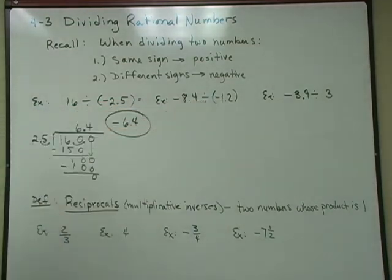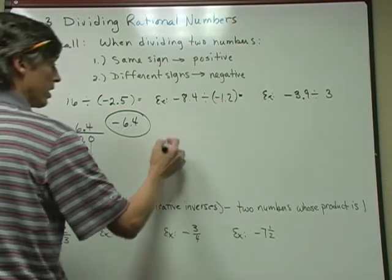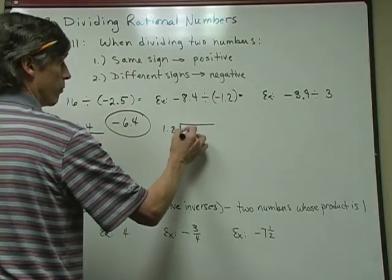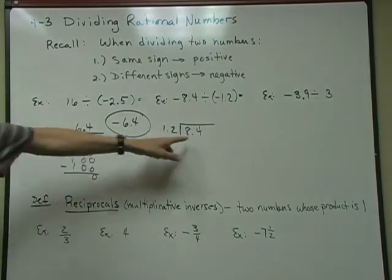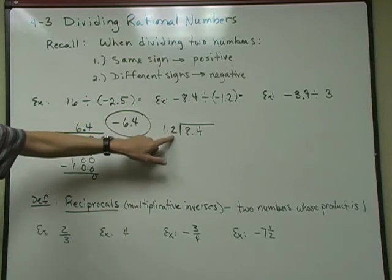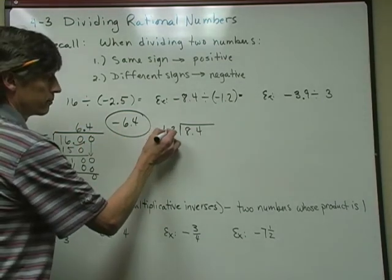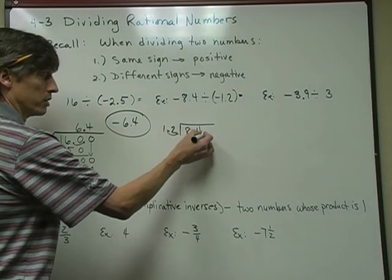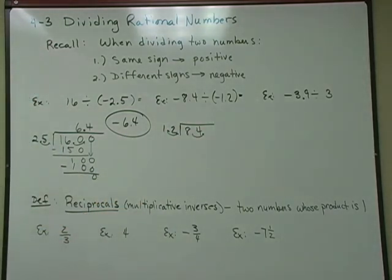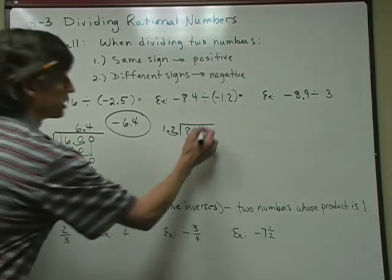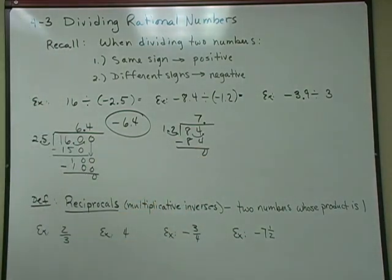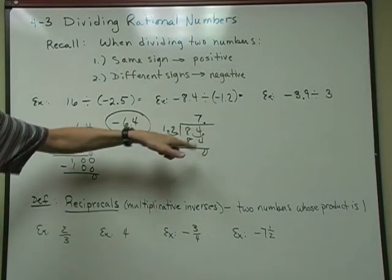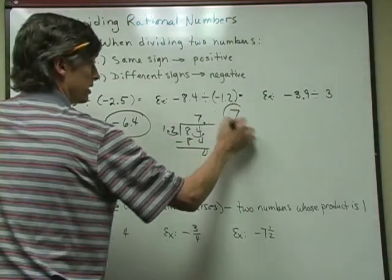Over here, I'm dividing a negative by a negative, so my answer is going to be positive. I'm going to put the 1.2 on the outside and 8.4 on the inside — 1.2 is the divisor, 8.4 is the dividend, and the answer is the quotient. I can't divide by a decimal, so both the divisor and dividend move one spot — now I'm dividing 84 by 12. 12 doesn't go into 8, but goes into 84 exactly 7 times. With 0 left over, my answer is positive 7.